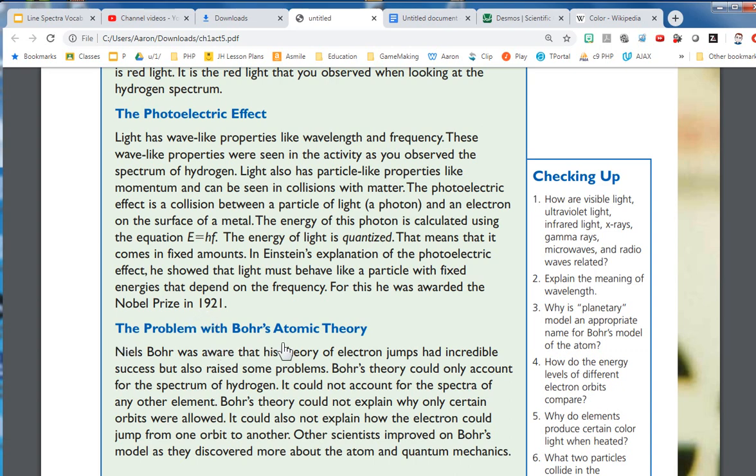The problem with Bohr's atomic theory. Niels Bohr was aware that his theory of electron jumps had incredible success, but also raised some problems. Bohr's theory could only account for the spectrum of hydrogen. It could not account for the spectra of any other element. Bohr's theory could not explain why only certain orbits were allowed. It could also not explain how the electron could jump from one orbit to another. Other scientists improved on Bohr's model as they discovered more about the atom and quantum mechanics.